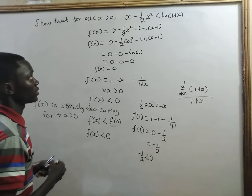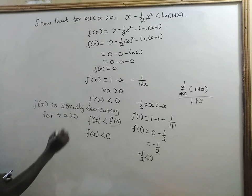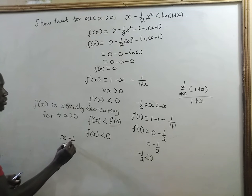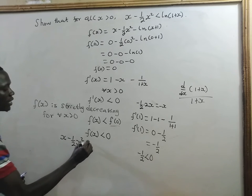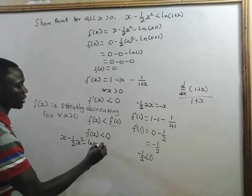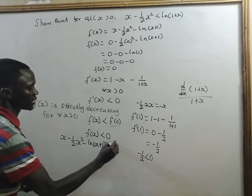Now, what is our f(x)? Our f(x) is x minus half of x squared minus natural log of x plus 1 less than 0.